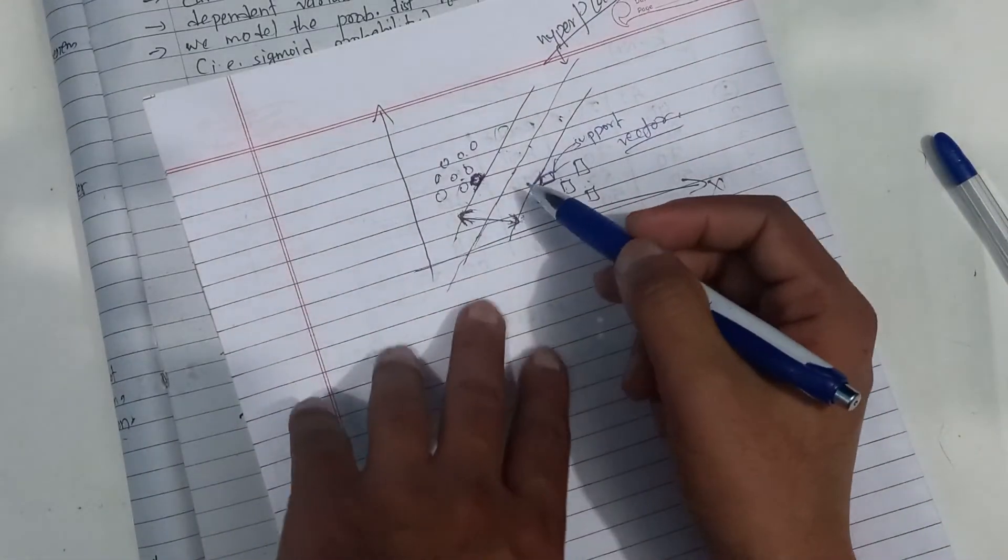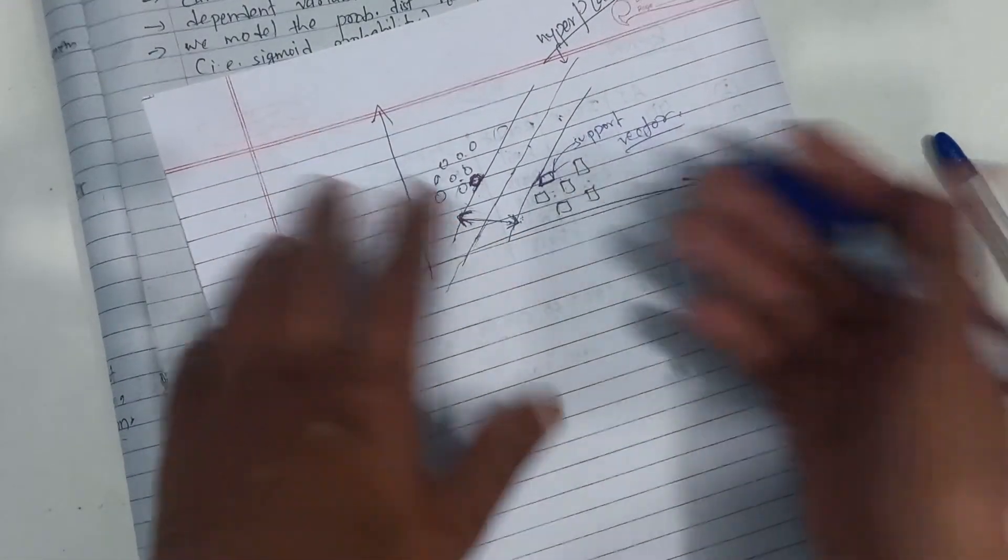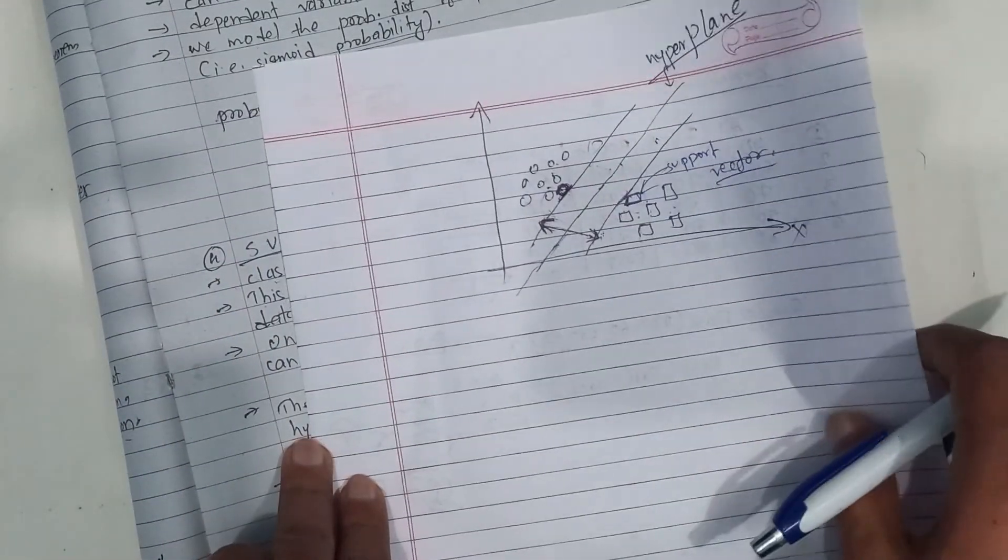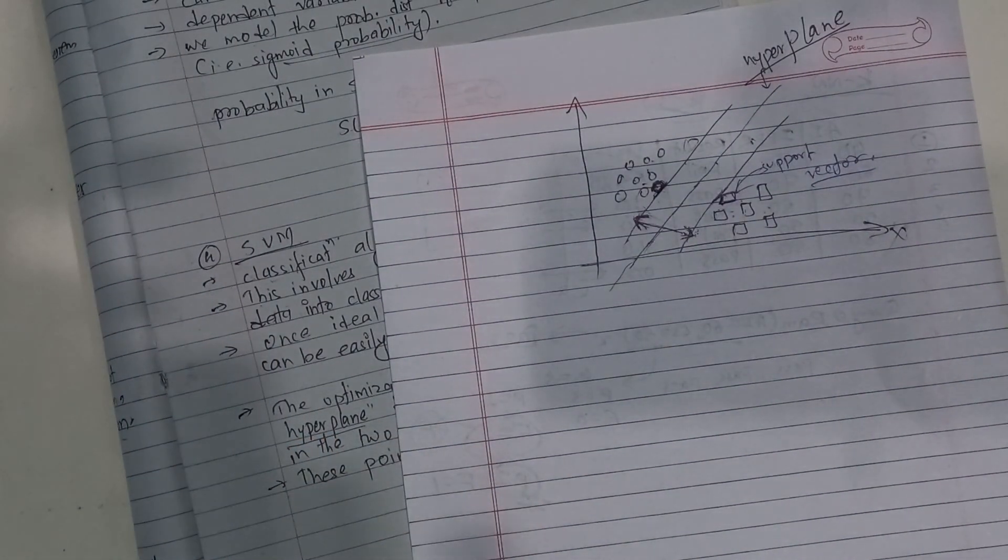And I am going to make this point. Maximum marginal hyperplane. What is the support vector? It is a support vector. Ok? Then we have to make this point.